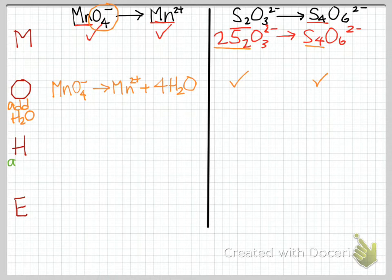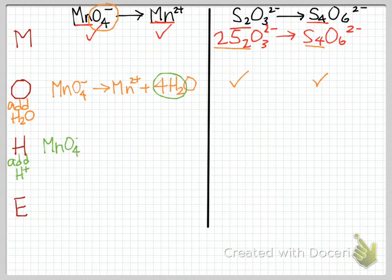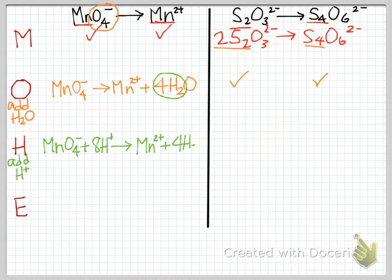Now H — balancing hydrogen. This occurs in an acidic solution, so we add H+ to balance hydrogens. In the first half reaction, we have four times two equals eight hydrogens on the right from the waters, and zero on the left, so we add eight H+ on the left: MnO4- plus 8H+ going to Mn2+ plus 4H2O. For the second half reaction, no waters were added and there are no hydrogens, so nothing to do there — check.